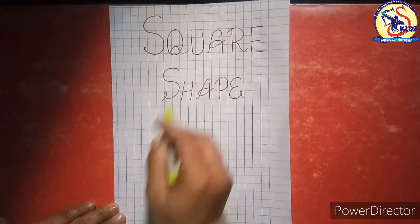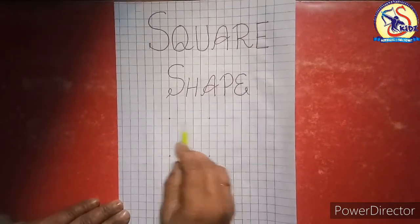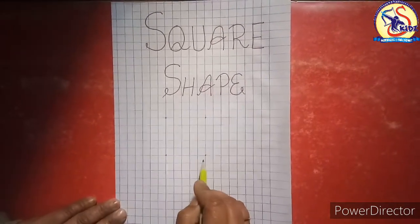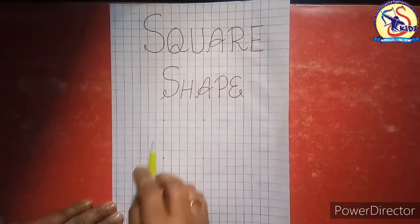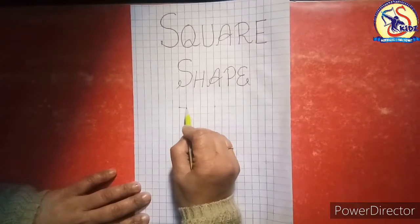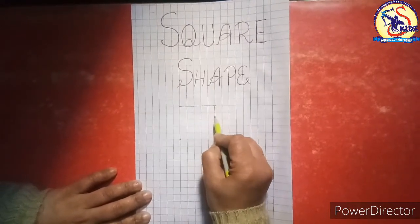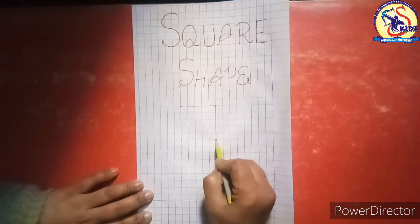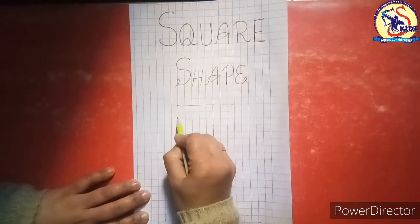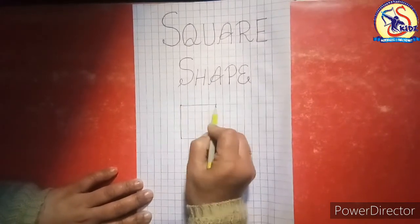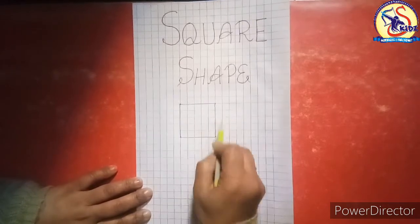We will learn how to draw a square shape. Look here kids, there are four dots given. We will make a square by joining these dots. Make a sleeping line, standing line, again sleeping line, standing line. This is a square and all sides of square are equal.